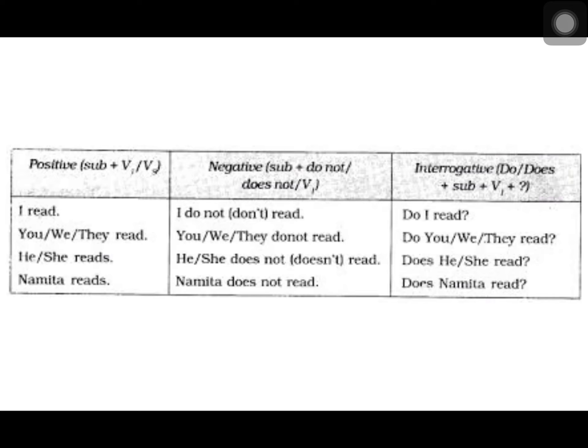Here are some examples. In positive sentences: I read; you, we, or they read; he or she reads; Namita reads. In negative sentences: I do not read; you, we, or they do not read; he or she does not read; Namita does not read. In interrogative sentences: Do I read? Do you, we, or they read? Does he or she read? Does Namita read?